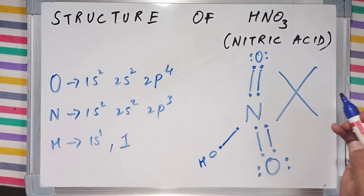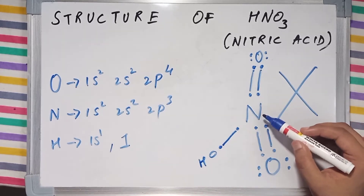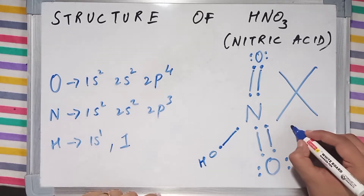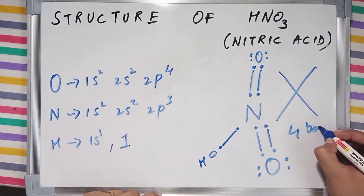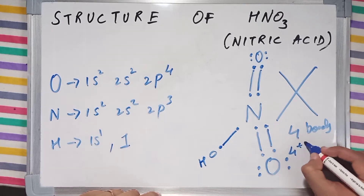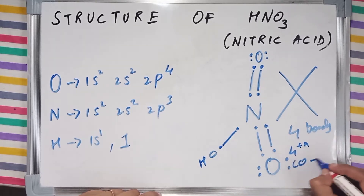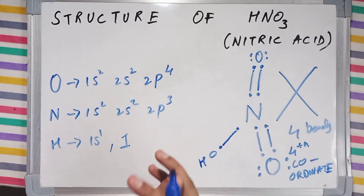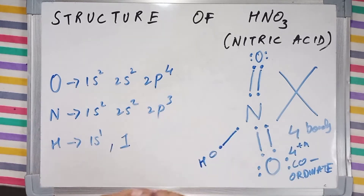Firstly, remember that nitrogen cannot make five bonds — it can make a maximum of four bonds, in which the fourth bond is going to be a coordinate bond. So it generally makes three bonds, but in certain cases it can make four bonds, where the fourth bond is a coordinate bond.